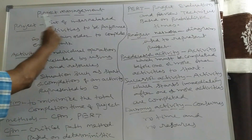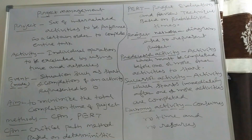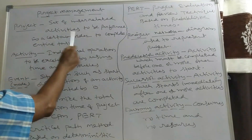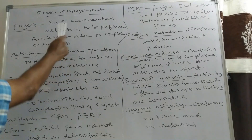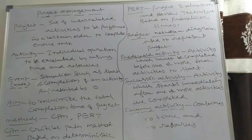Introduction to project management. In this topic, what is a project? A project is a set of interrelated activities to be performed in a certain order to complete the entire task. For example, take the construction of a building — it is a project. In that project, there are some activities.